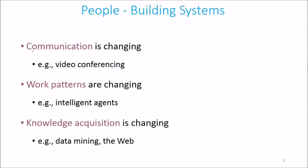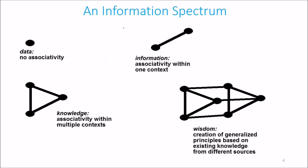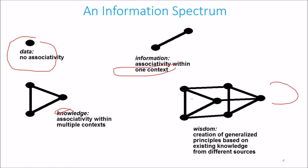People who are building software are seeing changes: communication is changing with video conferencing, work patterns are changing, we have intelligent agents now, and data acquisition is changing with data mining and the web. The information spectrum goes from data, which has no associativity, to information with associativity within one context, to knowledge associated with multiple contexts, and finally wisdom — the creation of generalized principles based on existing knowledge from different sources.